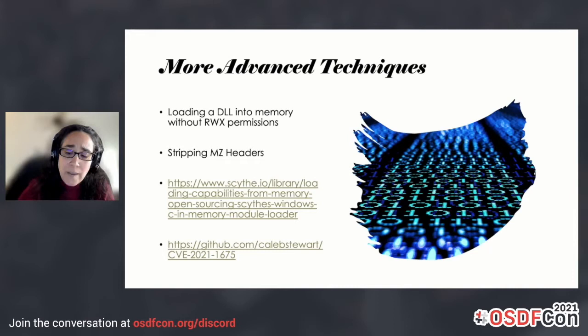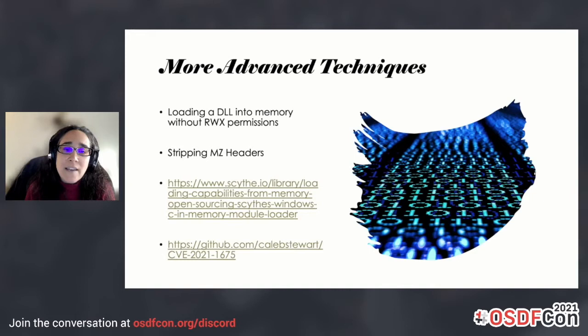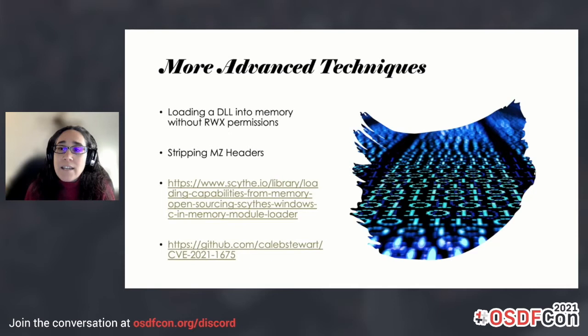One of the older libraries you can find on GitHub is something called Memory Module. I think the code is around six to ten years old at this point. But Scythe, this company, has basically forked that code, rewritten it, made it a little more user-friendly, and done some updates. You can find that on GitHub and play around with it. We're going to take a look at that code and see how it manifests within memory.